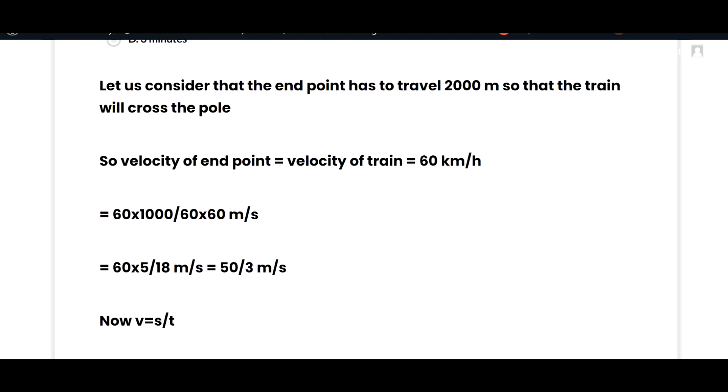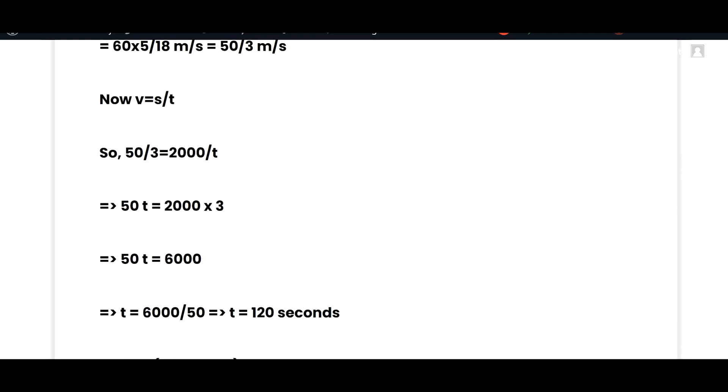Velocity of the endpoint equals velocity of the train, which is 60 kilometers per hour. Converting: 60 multiplied by 1000 divided by 3600 gives us 60 by 18 meters per second, which simplifies to 50 by 3 meters per second. Now we know that v equals s over t.